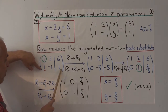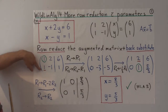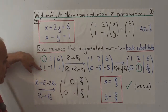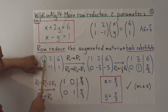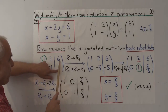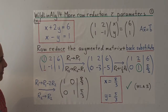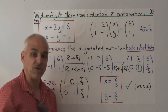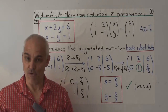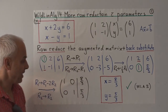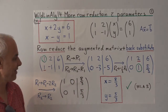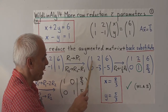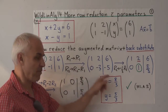We replace the second row with the second row minus the first row. One minus one is zero, minus one minus two is minus three, and one minus six is minus five. At this stage, the matrix is already in row echelon form, which means two things: all rows of zeros are at the bottom, and the leading entries of each row are staggered to the right as we move down.